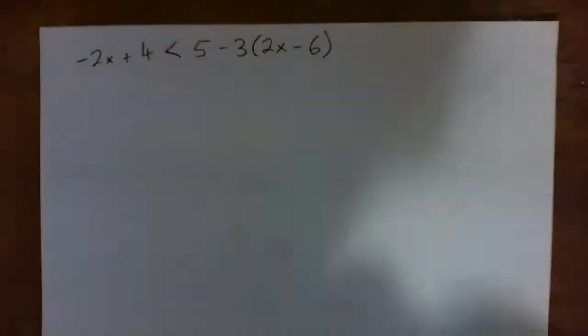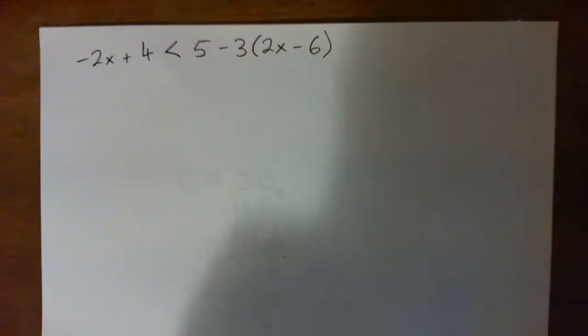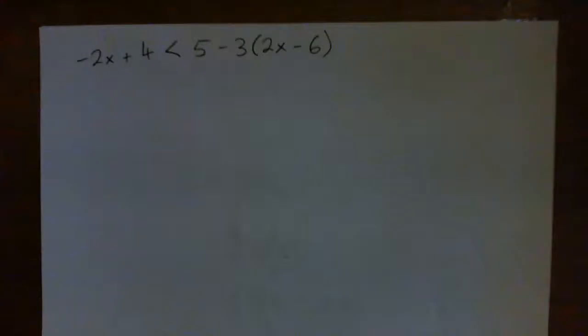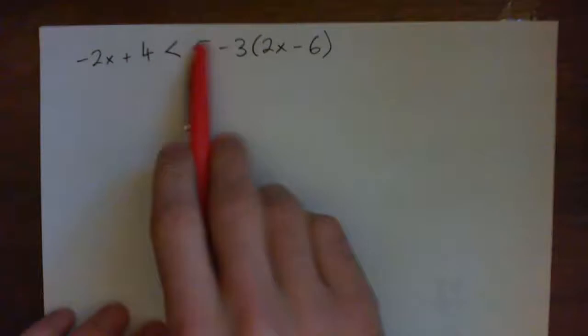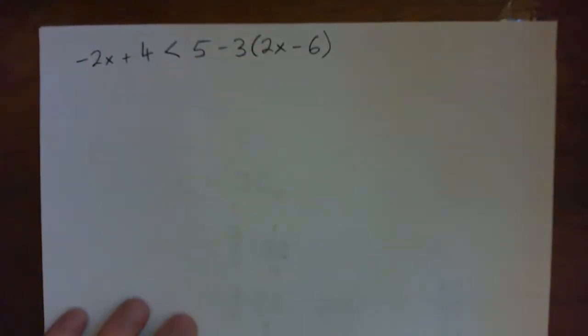All right, so we have negative 2x plus 4, and that's less than 5 minus 3 times 2x minus 6. I'm just going to point out the first common mistake on this question is going to be students going straight over here and doing 5 minus 3 makes 2. Now, do you know why that's wrong?